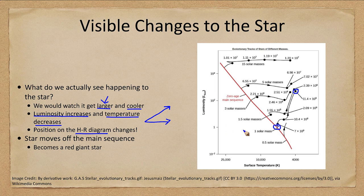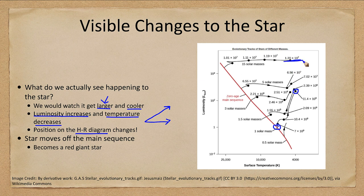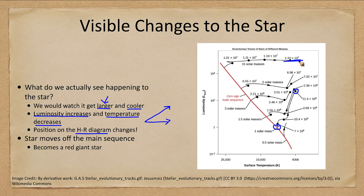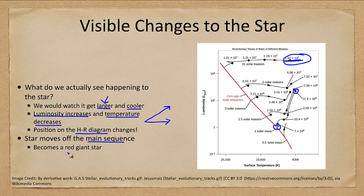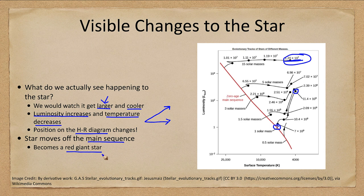Now if we look for the 15 solar mass star, please note the numbers here. This is 10 million years as opposed to 10 billion years, so a thousand times faster that it goes through its life here, becoming a red supergiant star. So the star is going to change and move off the main sequence becoming a red giant or a red supergiant depending on its mass.